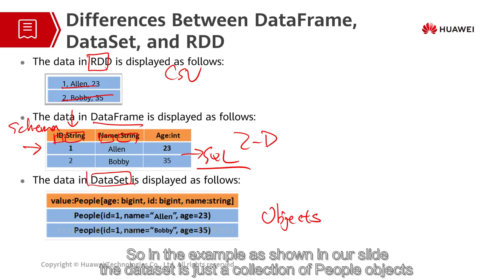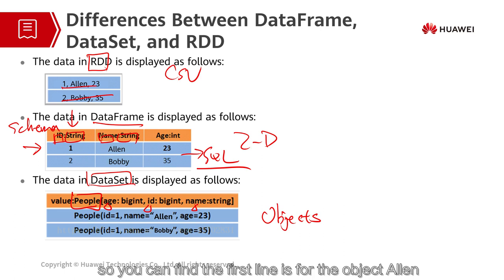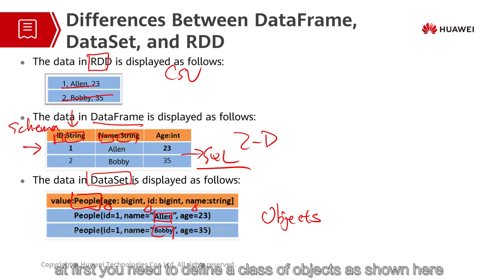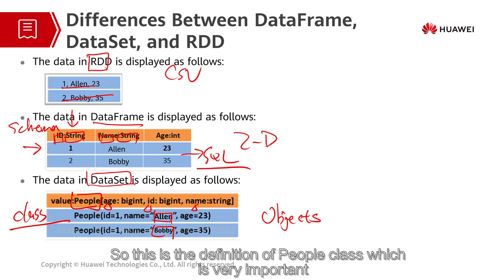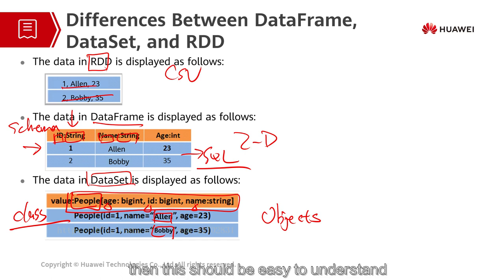So in the example shown in our slide, the Dataset is just a collection of people objects. For the people object, in this case, we mainly focus on the properties of age, id, and name. The first line is for the object Alan, and the second line is for the object Bobby. But again, if you want to use Datasets in Spark, at first you need to predefine that class of objects. So this is the definition of the people class, which is very important. And if you are familiar with some object-oriented programming languages, like Java, then this should be easy to understand.